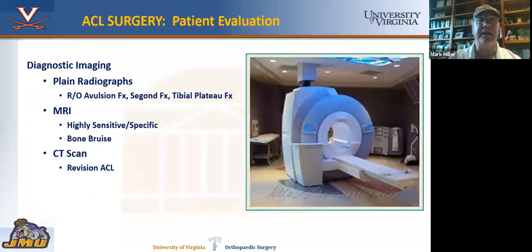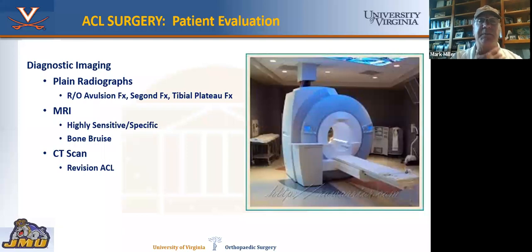After the exam, you need to get radiographs to look for associated injuries. You can also see avulsion fractures, a Segond fracture — which is a chip fracture — or a lateral capsular sign, and even tibial plateau fractures. Of course, we always get MRIs because they're highly sensitive and specific, showing us the bone bruise that's classically seen, and also helping us rule out other injuries like to the menisci. A CAT scan is helpful as well, particularly in revision ACL, to look for osteolysis.